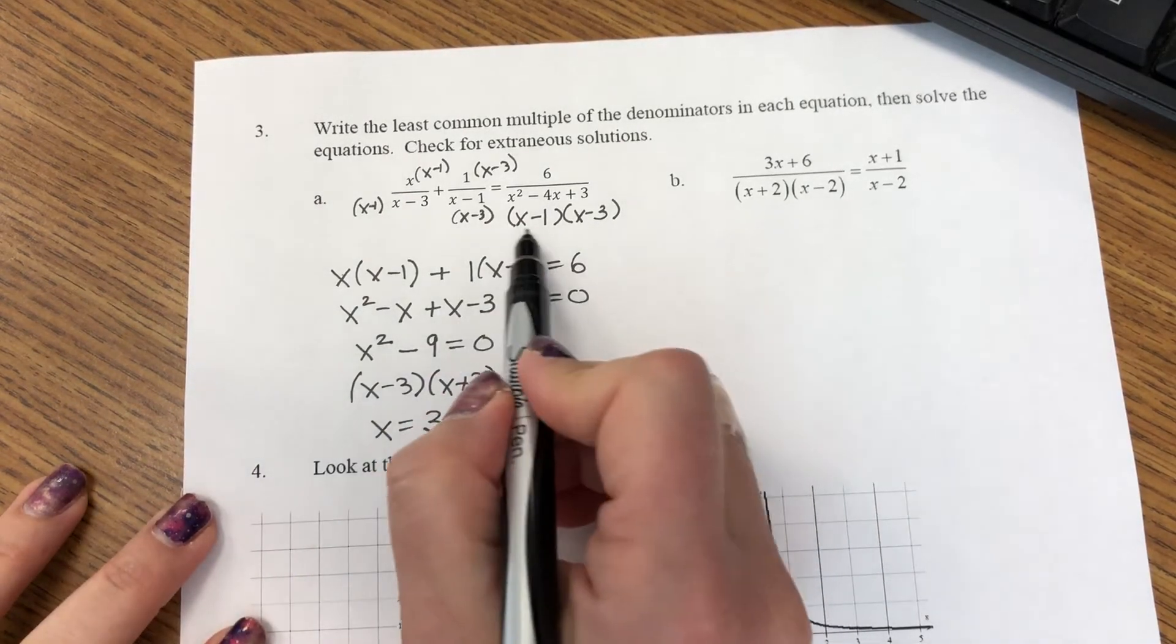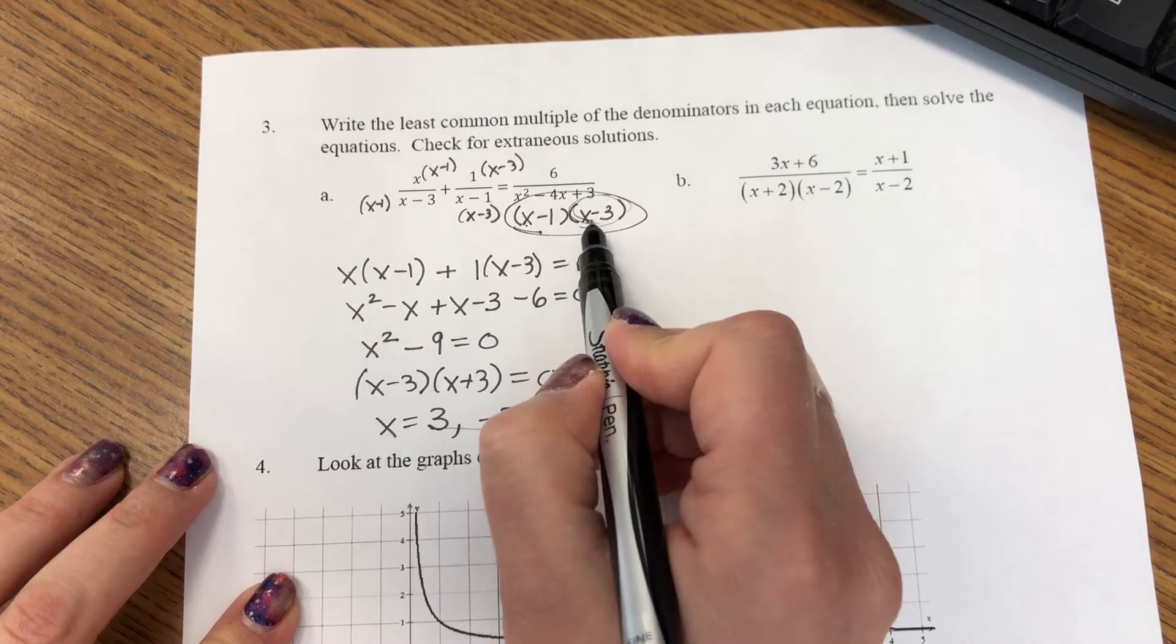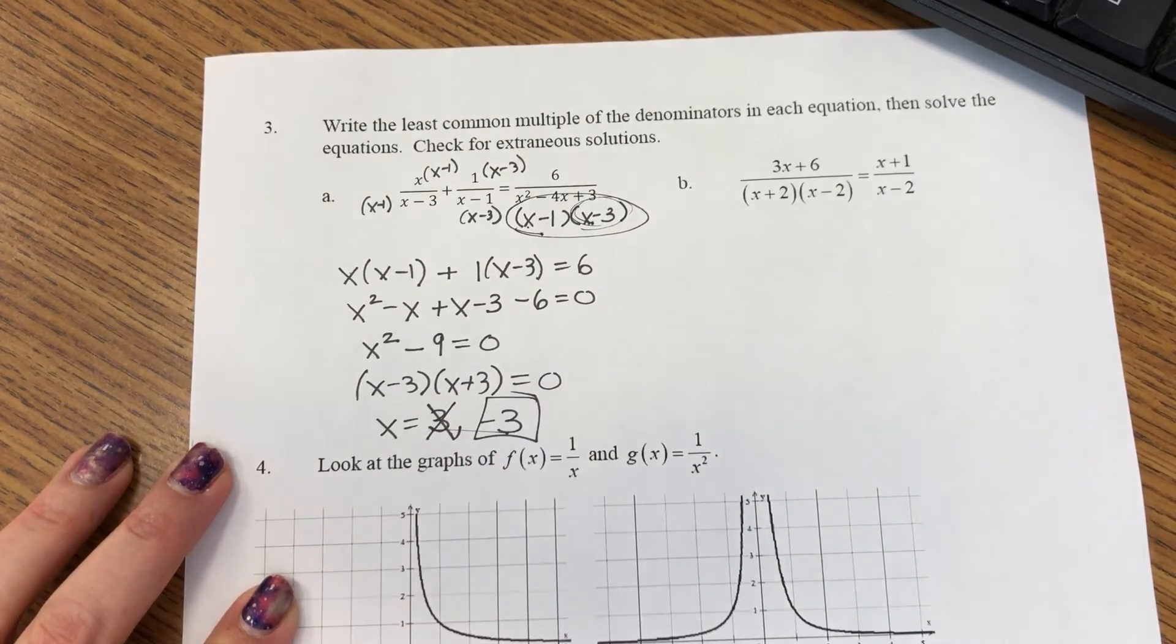Except I have to look for extraneous solutions. So back in my denominator, x cannot be 1. That's not a solution. And from here, x cannot be 3. So my only answer is negative 3.